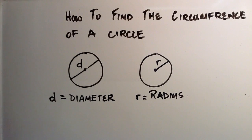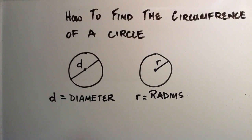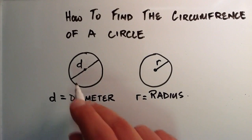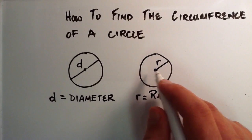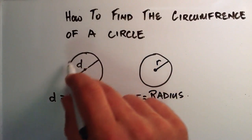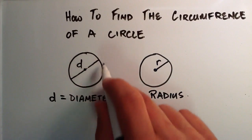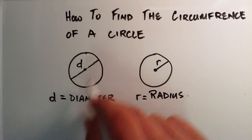Hello everybody, this is Paul. Today I'm going to be explaining how to find the circumference, or the distance around the outside of a circle. We usually use the diameter or the radius to find the distance around the outside of the circle, the circumference.